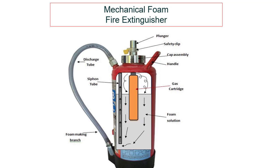Mechanical foam fire extinguisher — you can see the difference between the water type and mechanical foam type: there is a pressurized gas cartridge inside, and instead of water, foam solution is filled. The parts include a plunger inside the handle, safety clip, gas cap assembly, handle, discharge tube, and siphon pipe. When you press the plunger, it punctures the gas cartridge — which is at high pressure, maybe 25 to 30 kg per centimeter squared — and this creates a reaction with the foam solution, forcing the foam through the siphon to extinguish the fire.